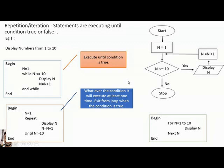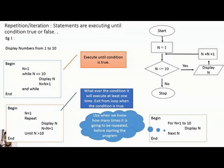FOR loop is used when you know how many times the loop will be repeated before starting the program. In this example, we use FOR because we know the program will execute exactly 10 times. Only when we know the number of iterations at the start can we use a FOR loop.